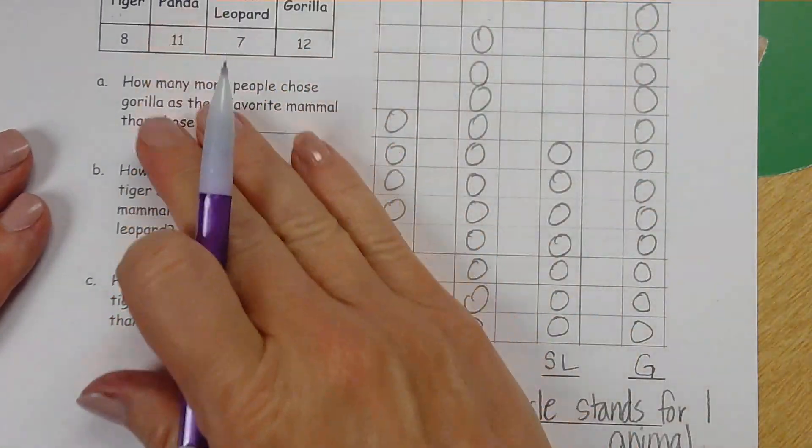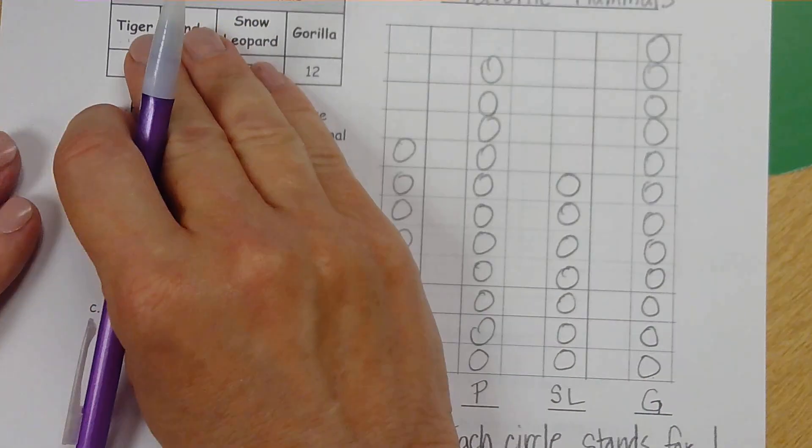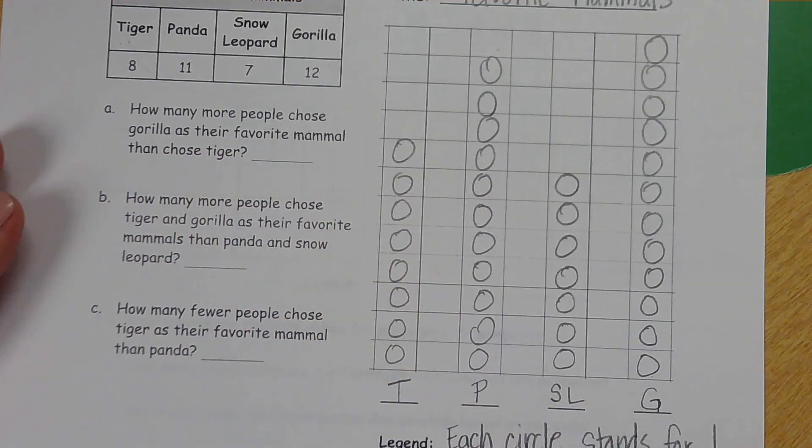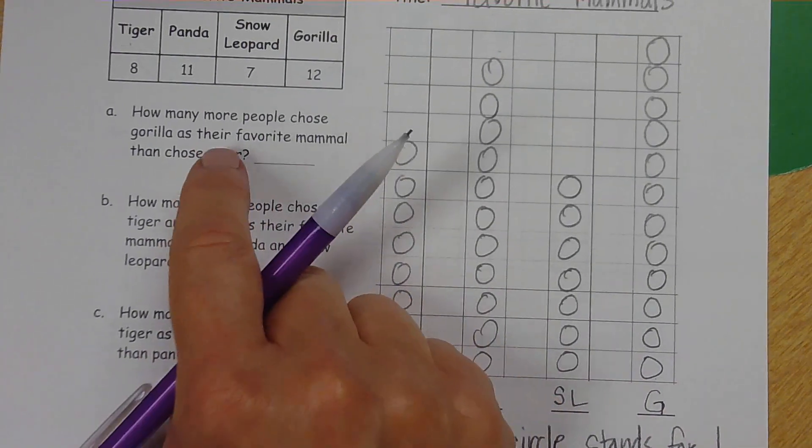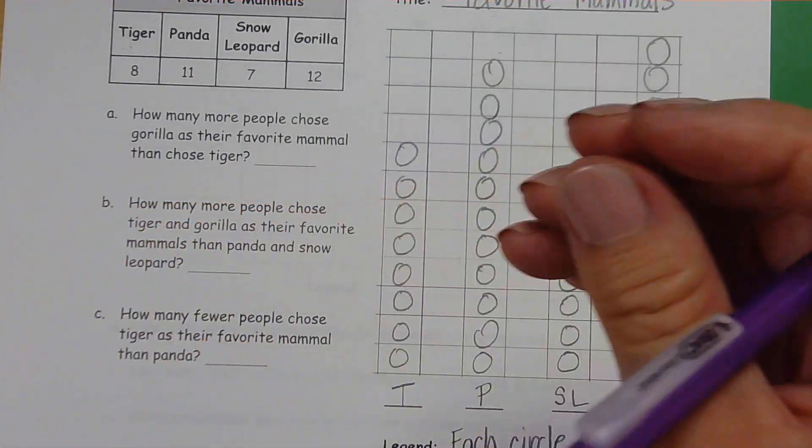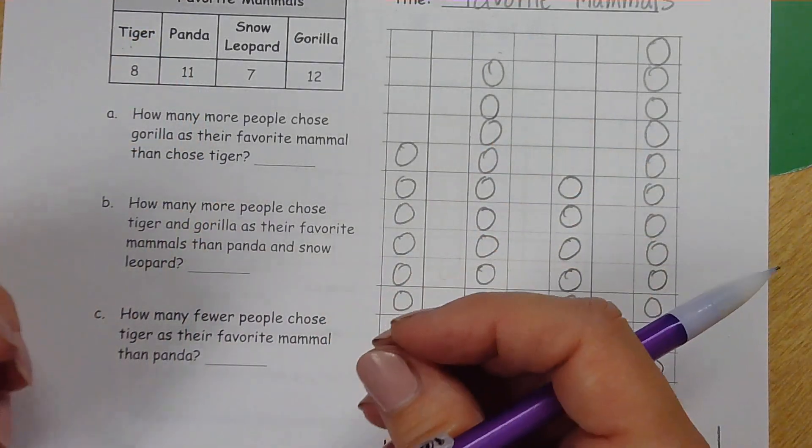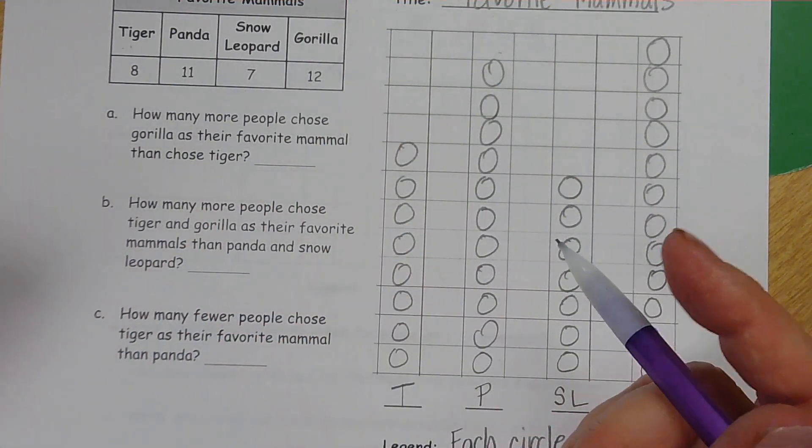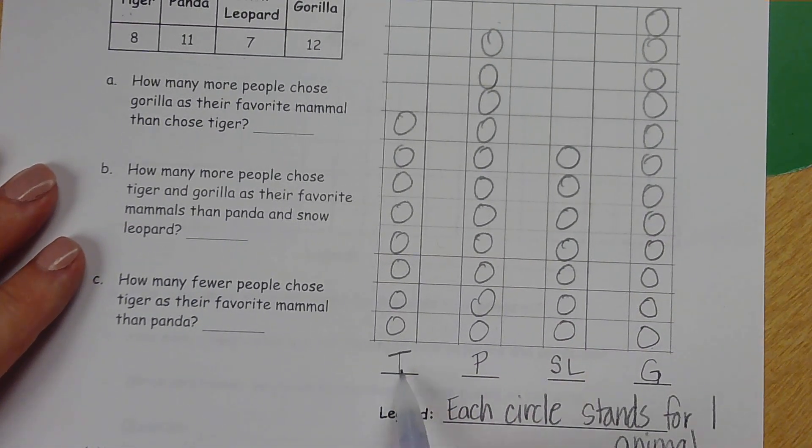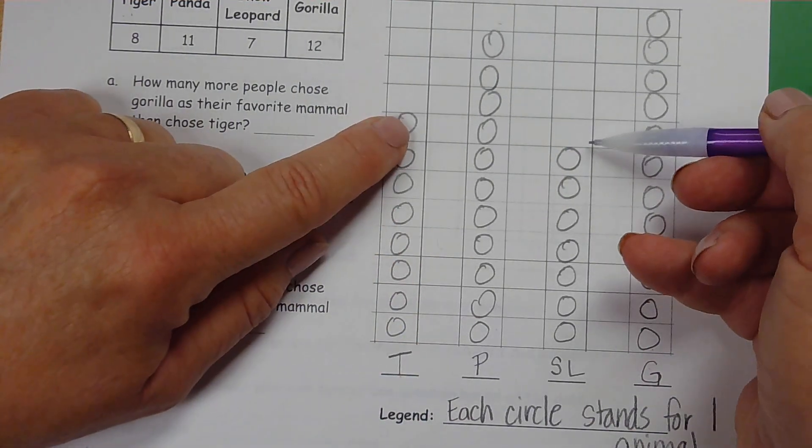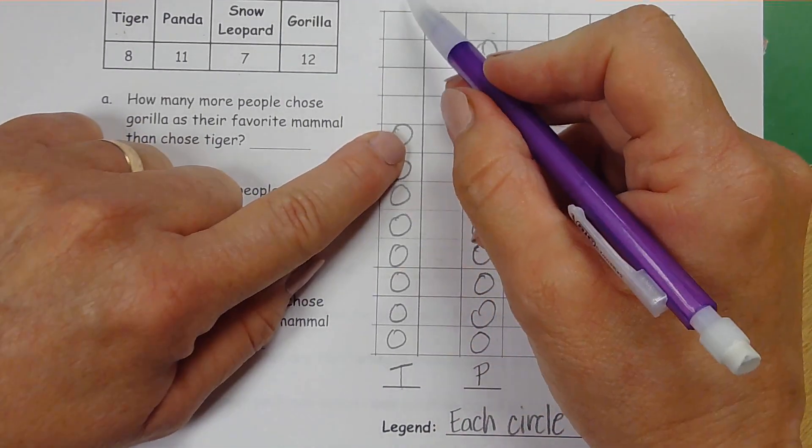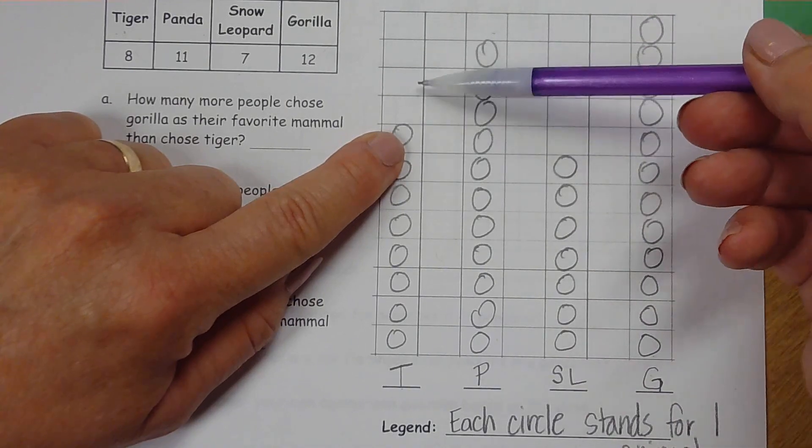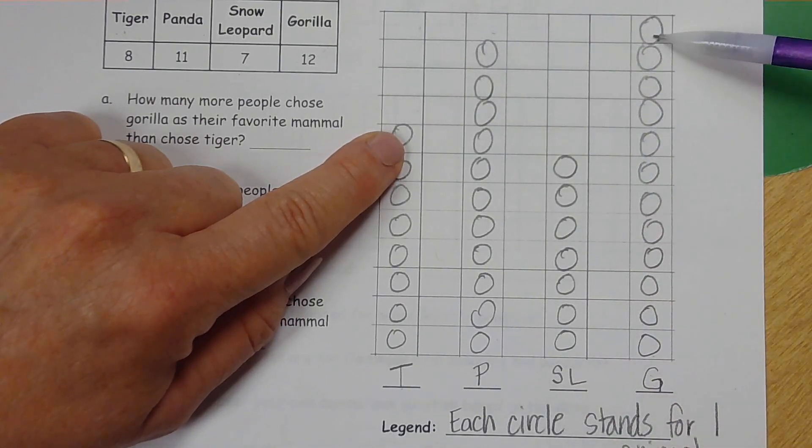We're going to use all of this information now to answer these questions. We can look at our graph, we can look at the table. How many more people chose gorilla as their favorite mammal than chose tigers? This is a comparing question. When we have a comparison question, we are being asked to compare two different amounts. So we need to know how much each one of them is and then what the difference is between them.